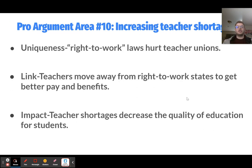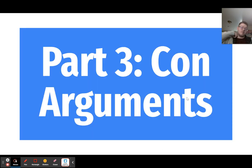The tenth and final pro argument is increasing teacher shortages. Right-to-work laws hurt teacher unions because teachers can't be required to join or pay for them. If teacher unions can't work effectively, many teachers will move away from right-to-work states to get better pay and benefits elsewhere. That means right-to-work states experience higher teacher shortages, which decrease the overall quality of education for students. Remember: to win on the pro, you must prove that unions are good, unions are necessary, and right-to-work laws directly hurt union membership, power, and funding.